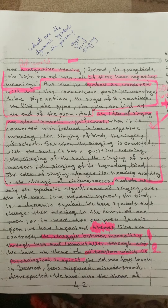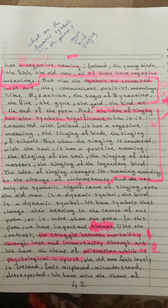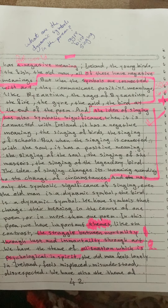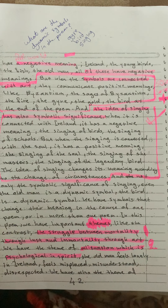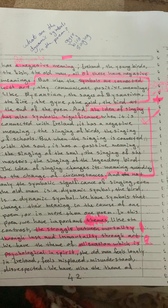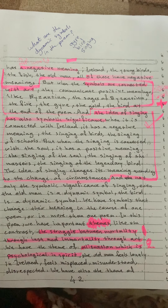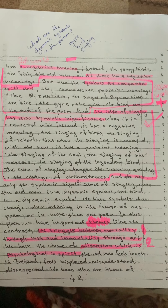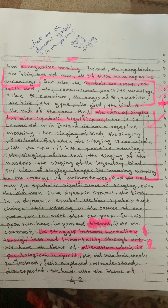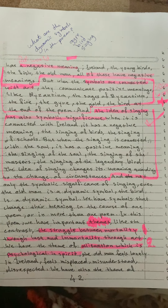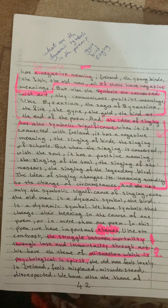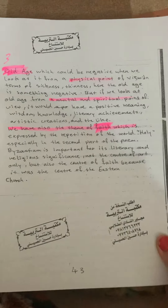The second theme is alienation, which is very important. The poet himself feels alienated and strange to his country because he is an old man, not like his fellow citizens. He feels lonely in Ireland, misplaced, misunderstood, and disrespected, and all of these feelings are manifested in this poem.